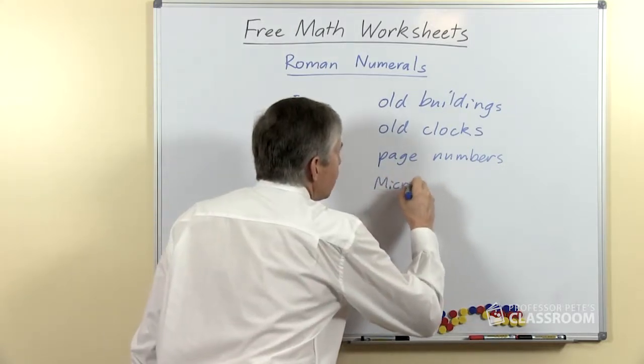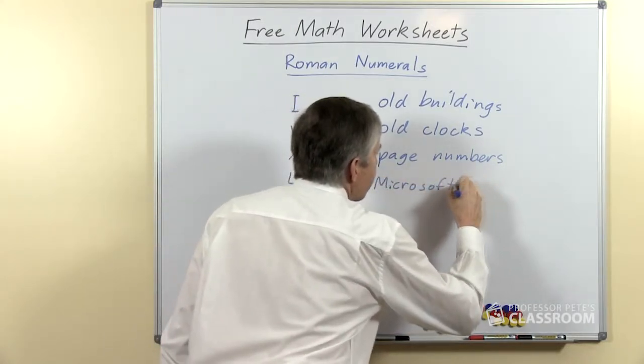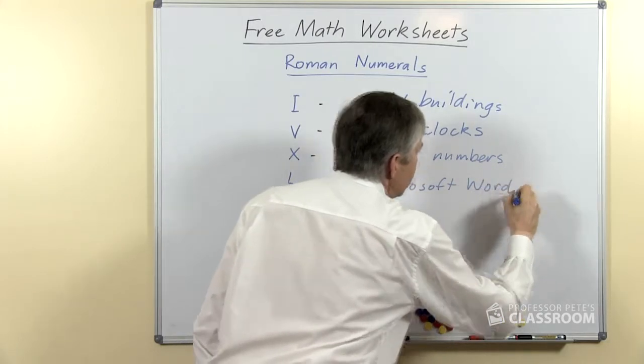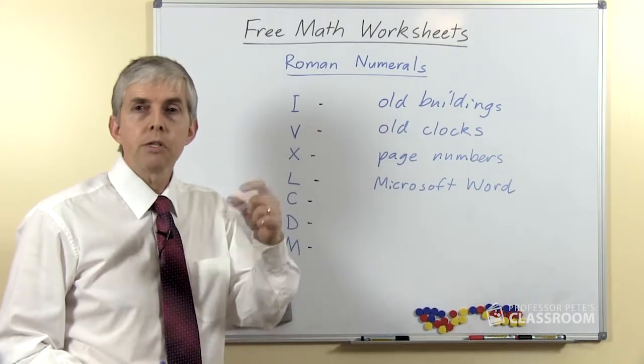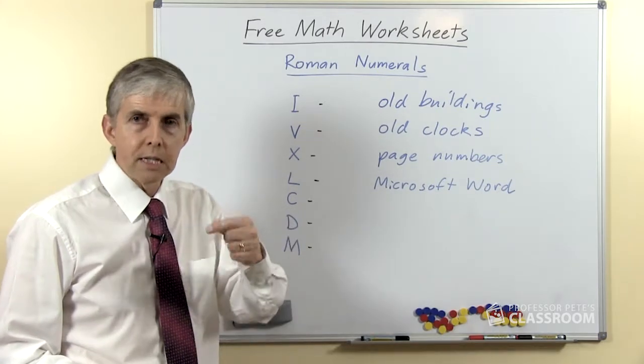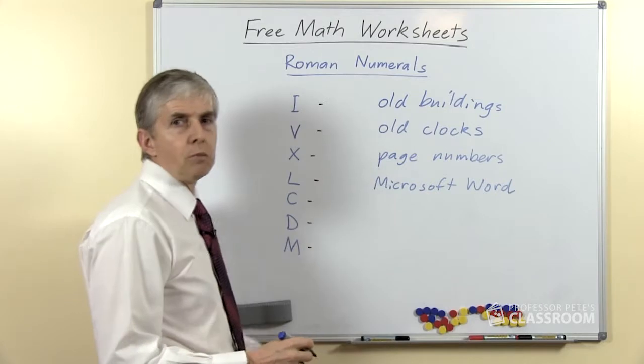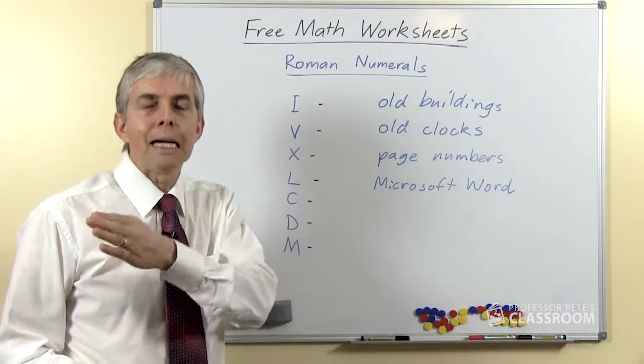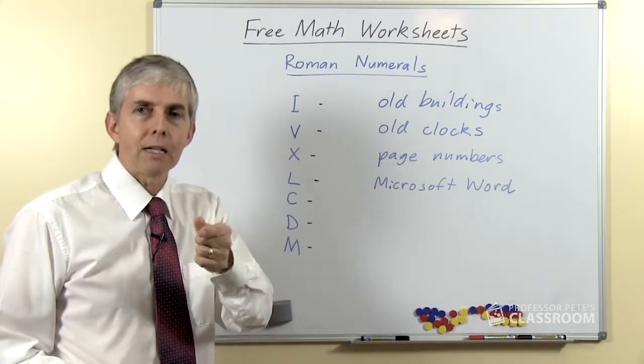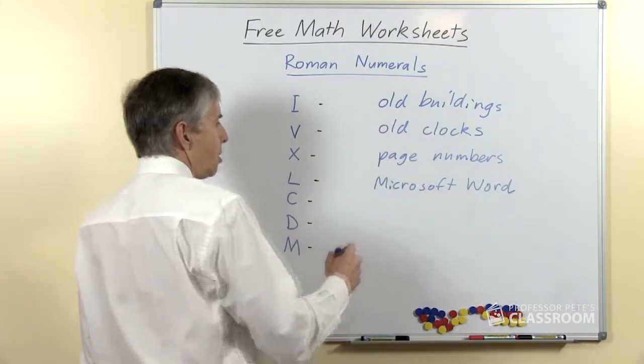Here's another one you may have come across. In Microsoft Word you can use Roman numerals to number pages, but also to number lists. We use Roman numerals as a way of numbering sub-lists, so you can have a main list that says 1, 2, 3, 4, and then if you have parts of the list it'll use Roman numerals.